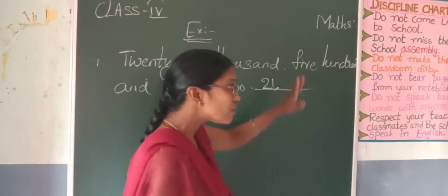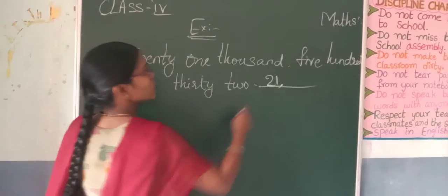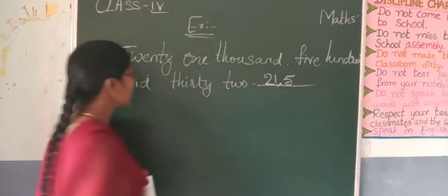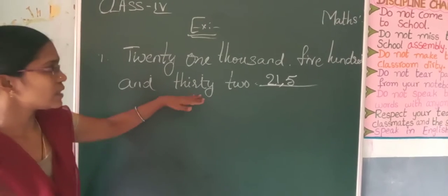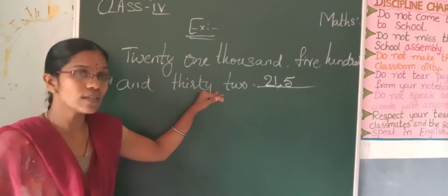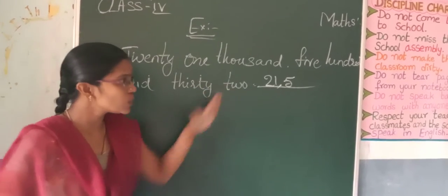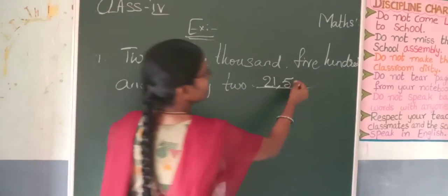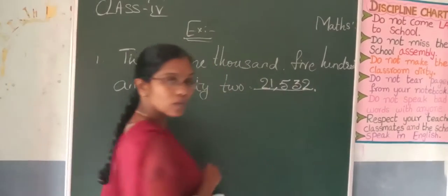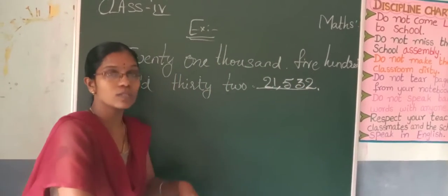Next, what he's given in the hundreds place: 500. What he's given? 5. So what you will write here: 532. What he's given for you here: 32. So right here, 532.